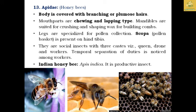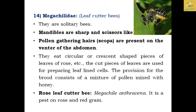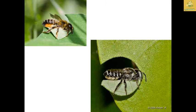The family Megachilidae comprises leaf cutter bees. They are solitary. The mandibles are sharp and scissor-like, used for cutting leaves in a semicircular shape. Pollen-gathering hairs (scopa) are present on the ventral surface of the abdomen. They cut semicircular or crescent-shaped pieces from leaves of roses and use these cut pieces to prepare leaf-lined cells. Example: Megachile anthracina, a pest of rose as well as red gram. They do not harm plants directly, but reduce the photosynthetic and covering area of the crop.